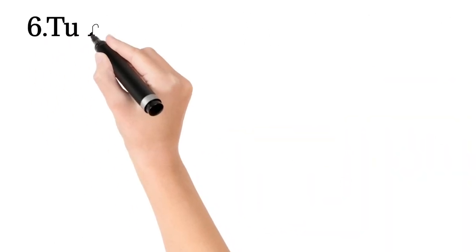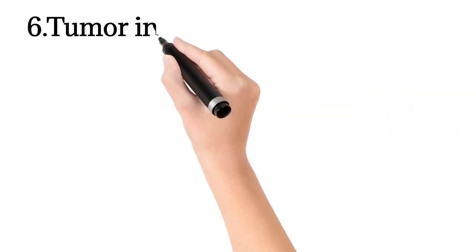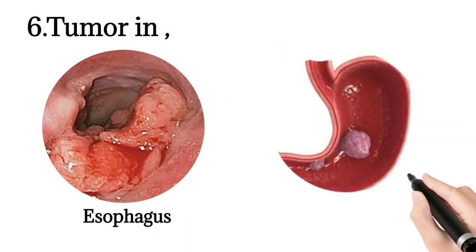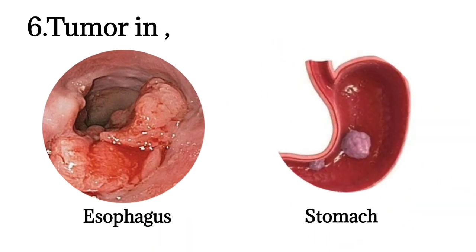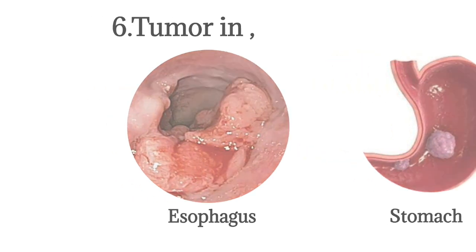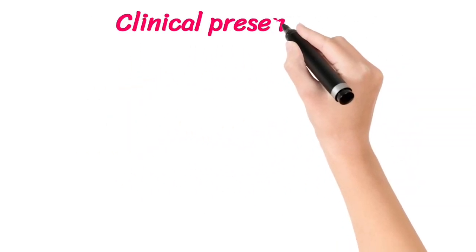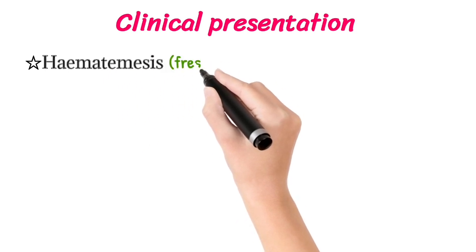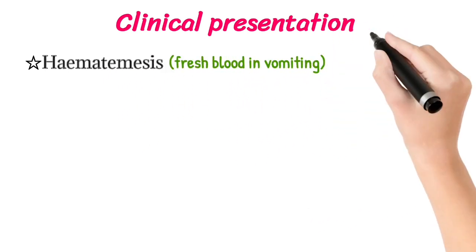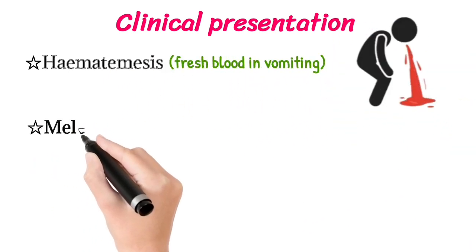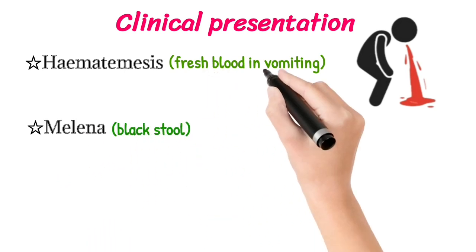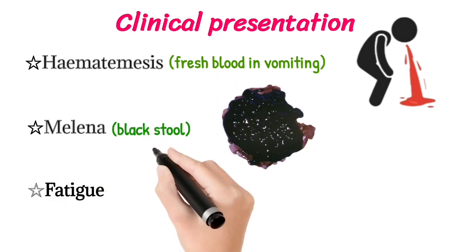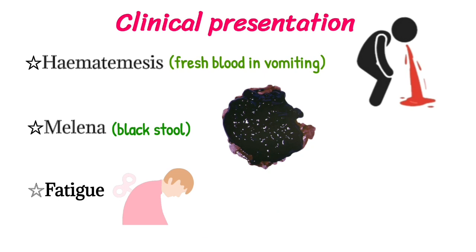The sixth cause is tumor of the esophagus and tumor of the stomach. Regarding clinical presentation, it includes hematemesis, which is fresh blood in vomiting; melena, which is black stool; and fatigue.